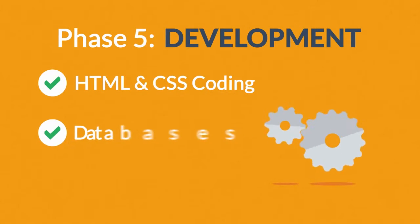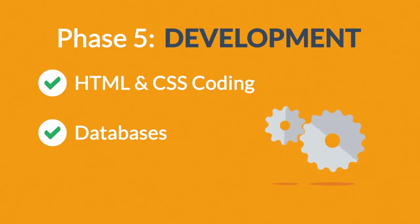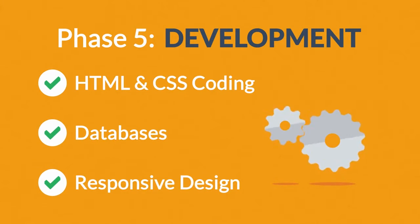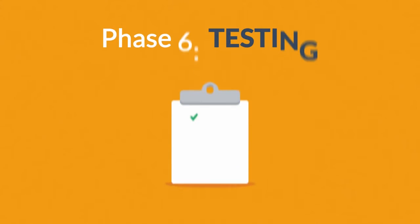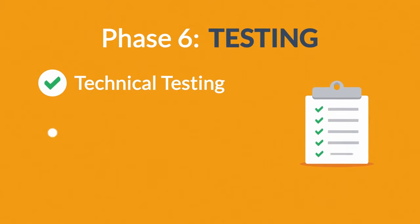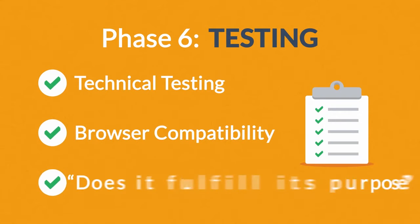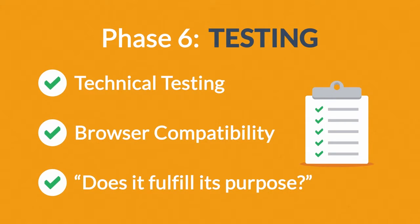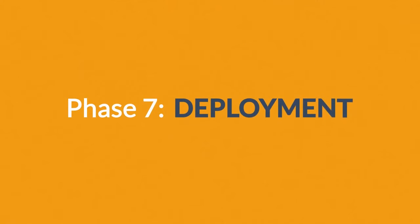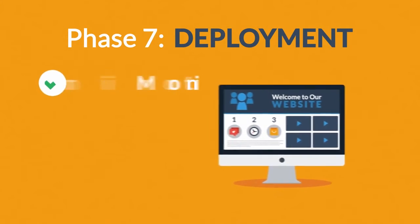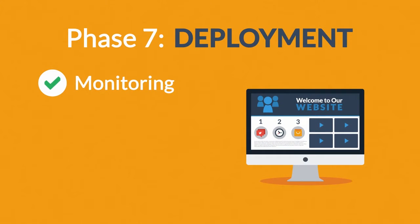We also use databases and other technologies if needed, and our websites can be made accessible to mobile devices too. Phase six: Testing. We test all the technical features like coding, scripts, and compatibility with major browsers, but we also ask ourselves if the website really fulfills its purpose.